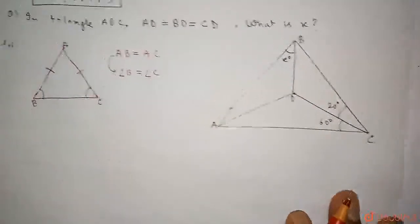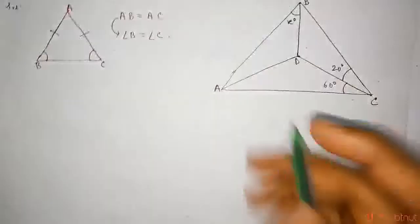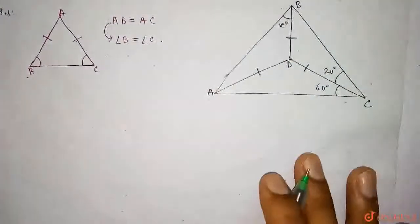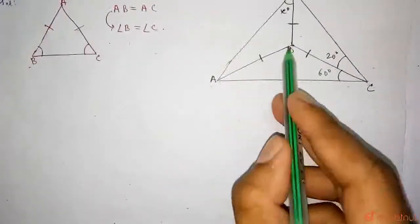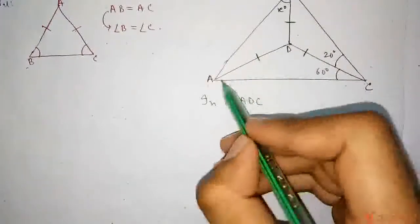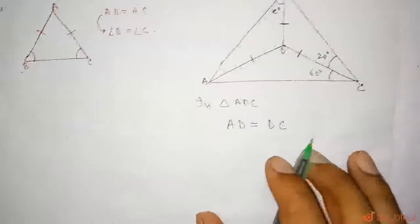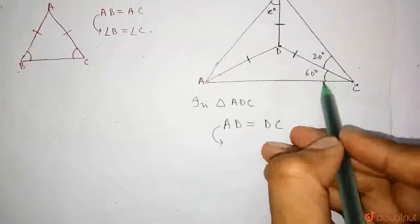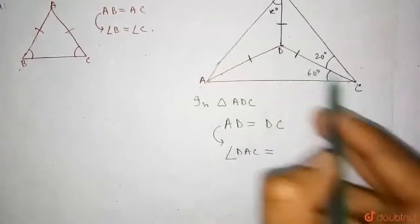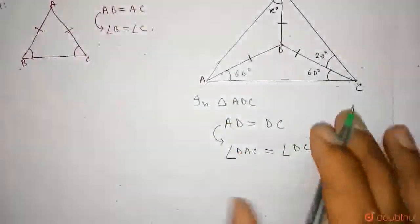Here in the given question, we are given that AD is equal to BD is equal to CD. In triangle ADC, we can see that AD is equal to DC. So we can say that angle DAC is equal to angle DCA, which is equal to 60 degrees.